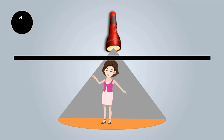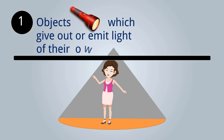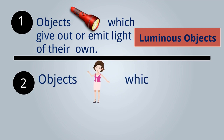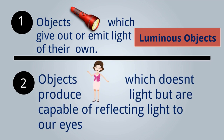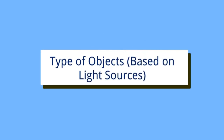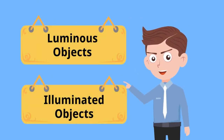You can see there are two distinct things. First, objects which can give or emit light are known as luminous objects. Second, objects which don't produce light but are capable of reflecting light to our eyes — like the girl — they cannot produce light but can reflect it, and they are known as illuminated objects.